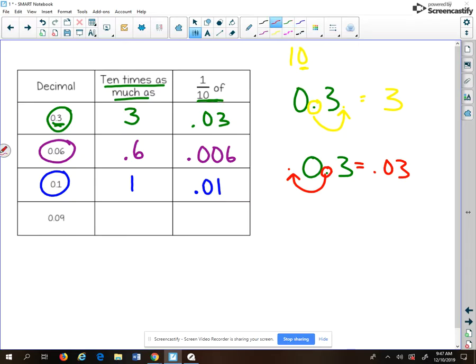And then finally, the last one down here at the bottom, we have 9 hundredths. We want 10 times as much. We're going to move it one place to the right and we get 9 tenths. If we want one-tenth of, it's getting smaller, we're moving it one place to the left and we get 9 thousandths.